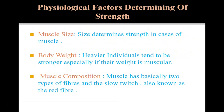Next point is body weight. Heavier individuals tend to be stronger, especially if their weight is muscle. Lean body mass, which is body weight minus fat, is an important determinant of strength. Lean muscle mass equals higher capacity to lift weight and is a benefit in sports like weightlifting.